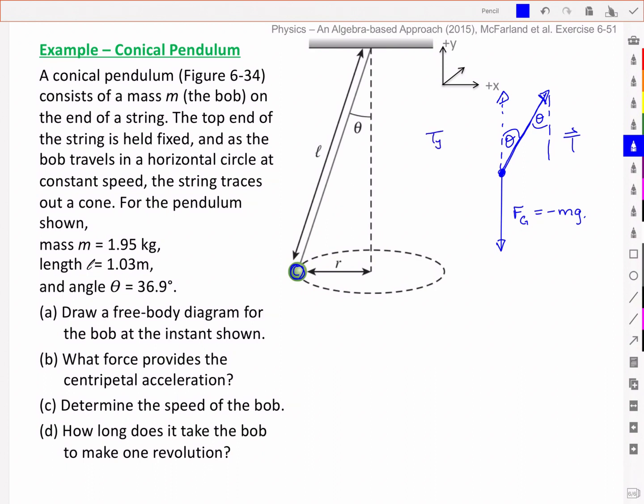And so my y component is just a positive T cos theta, and my x component, which I'm going to draw up here, is equal to a positive T sin theta, and I've defined my axes here for the particular instance that we're looking at in the figure.